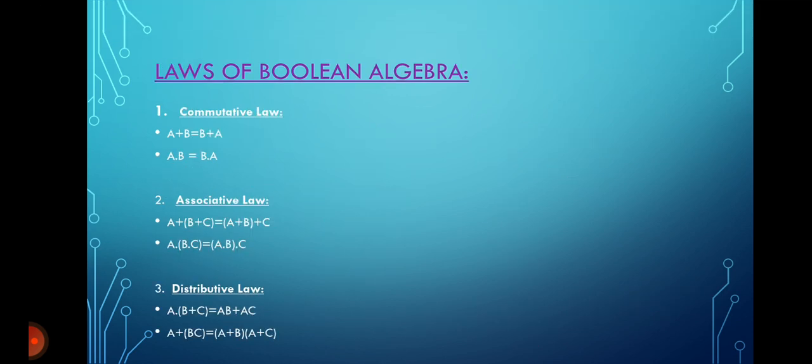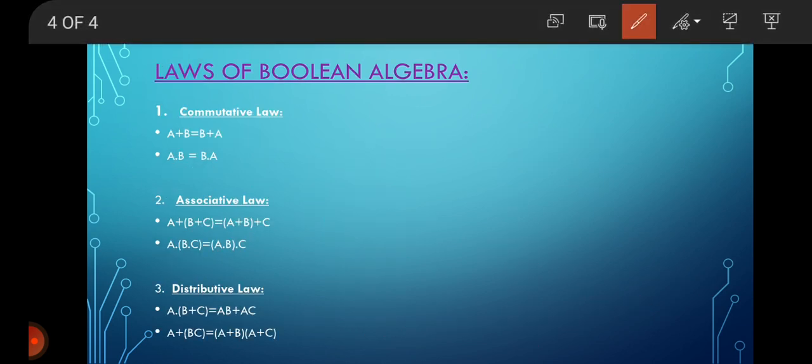Next are the laws of Boolean algebra. The first is the Commutative Law. Any binary operation which satisfies the following expression is referred to as a commutative operation. Therefore: A plus B equals B plus A, and A AND B equals B AND A. That is, A OR B equals B OR A, and A AND B equals B AND A. In the commutative law, the order is irrelevant.